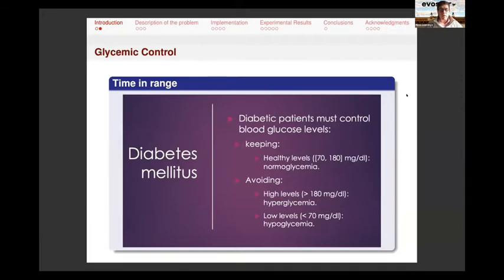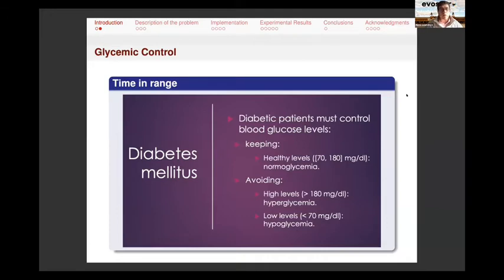The objective of the diabetes patient is, as I told you, to put insulin in order to maintain healthy levels of blood glucose. In particular, we usually talk about the time in range. The International Diabetes Federation talks about this time in range, that the higher the time in range, that is the glucose level between 70 and 180 milligrams per deciliter, the better. And this is what we want to do to make a recommendation on insulin.